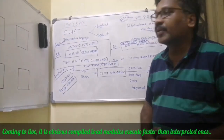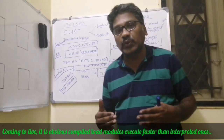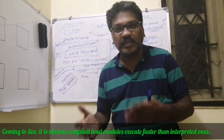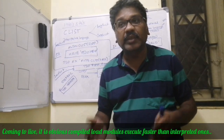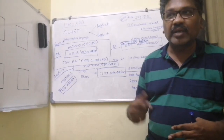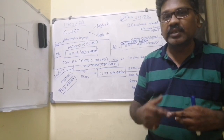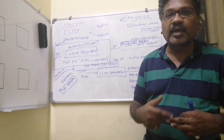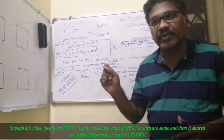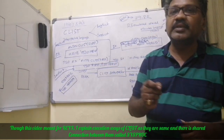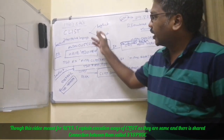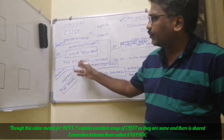Explicit way means you provide the location of the source code and you want the CLIST interpreter to execute it — that is explicit execution. Implicit way means you just give a utility name without providing a location. The system searches its pre-allocated data sets, finds it, and gets it allocated for you.